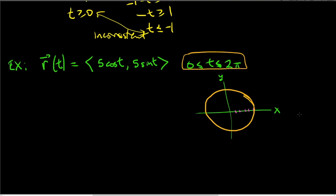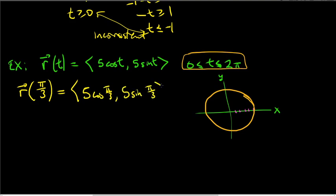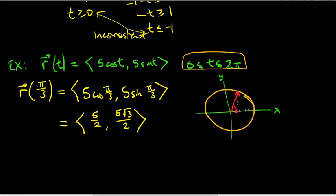We can evaluate for various values of t. Let t = π/3: r(π/3) = ⟨5 cos(π/3), 5 sin(π/3)⟩ = ⟨5/2, 5√3/2⟩. That vector points at angle π/3 from the positive x-axis, so in this case t equals the angle with the positive x-axis.